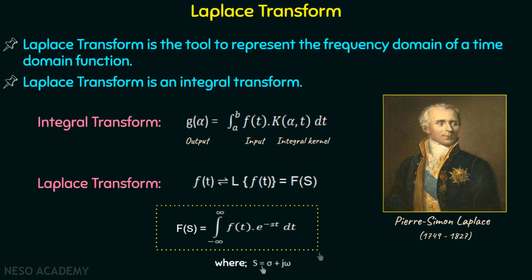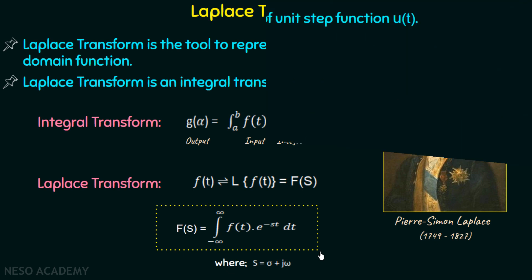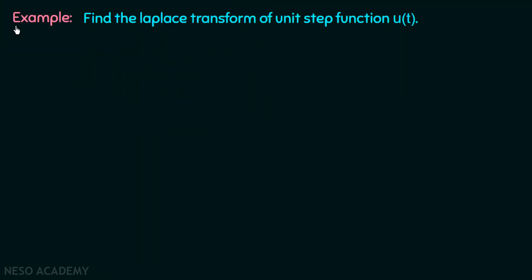In this expression, s equals σ plus jω, where σ is the damping factor of the control system — the stability of the control system depends upon the damping factor — and ω is the angular frequency. Now we are done with the expression of Laplace transform, and we will use this expression to convert a standard time domain signal to its frequency domain. Let's take an example.